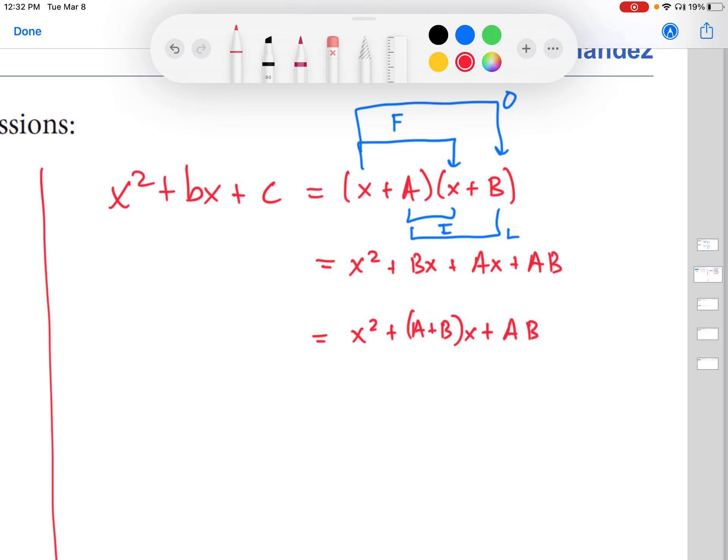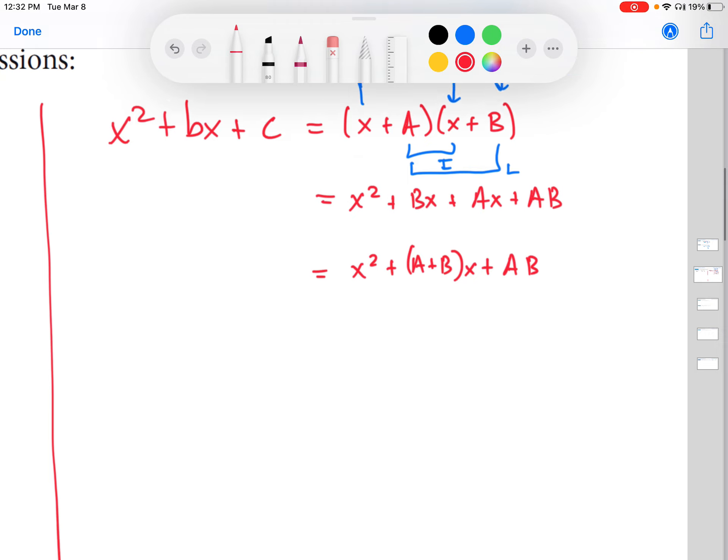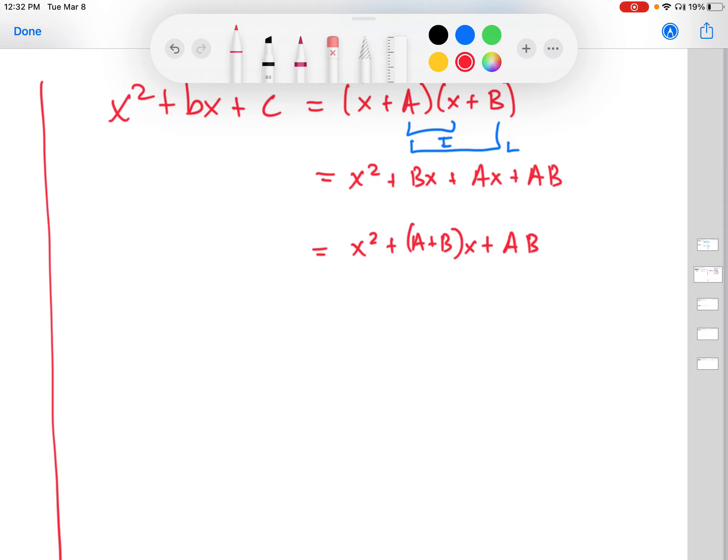All right. So at this point, things look a little more complicated than when they initially started. But that's because we're reviewing how to do this in general. And then we'll apply it to the two examples on the left. So remember, we want this expression to be the same as x squared plus bx plus c. So we can now compare the coefficients. The coefficient of x here is A plus B. The coefficient of x here is little b. So that gives us one condition. And then we get a second condition by comparing the coefficient of the number one, which is just AB, and the coefficient over here is just c.